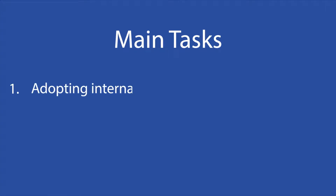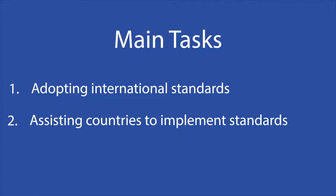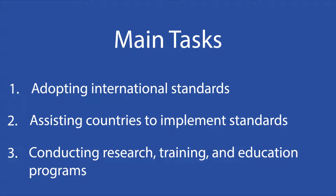The ILO's three main tasks are: adopting international human rights standards related to labor; assisting countries — especially those with developing economies — in implementing these standards; and conducting research and running training and education programs.